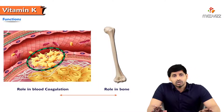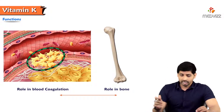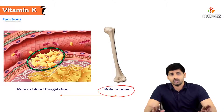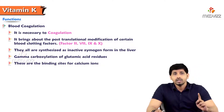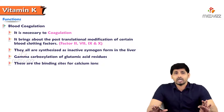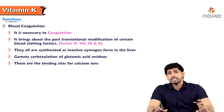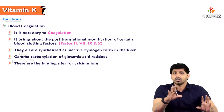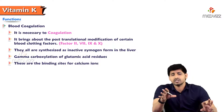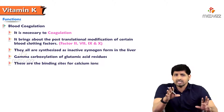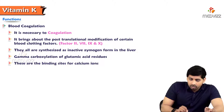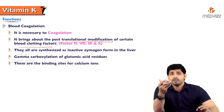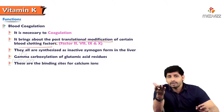Vitamin K has a major role in blood coagulation. Any protein synthesized in our body needs post-translational modifications. The clotting factors in our body are also protein in nature, synthesized by the liver. To bring about the post-translational modifications of certain blood clotting factors, vitamin K is required. Without vitamin K, clotting factors like factor 2, factor 7, factor 9, and factor 10 are all synthesized in an inactive form.